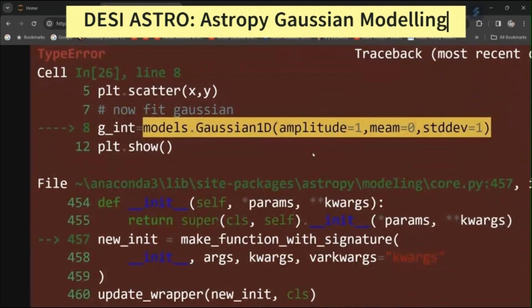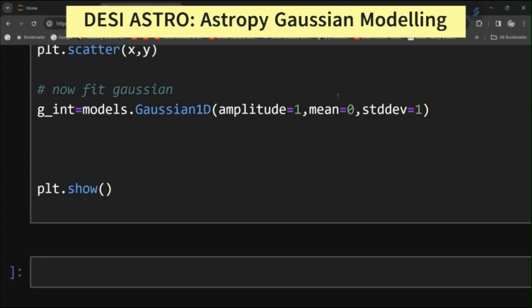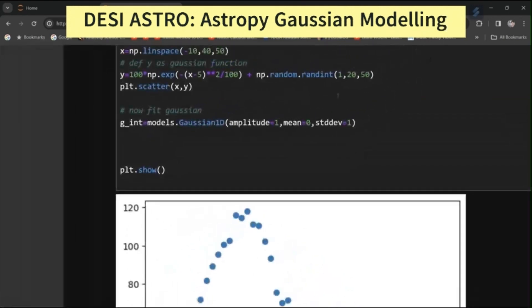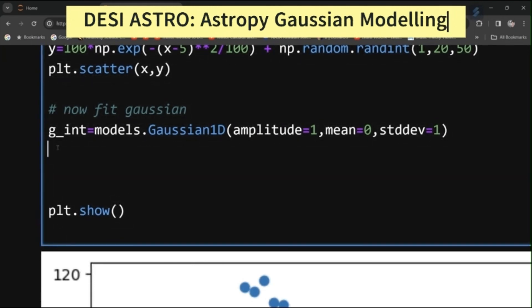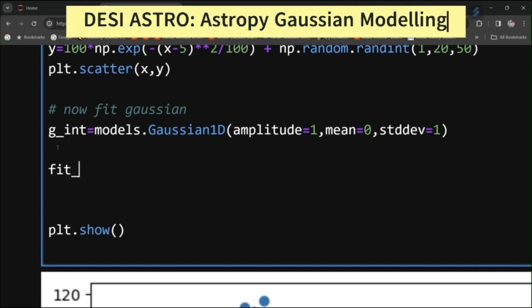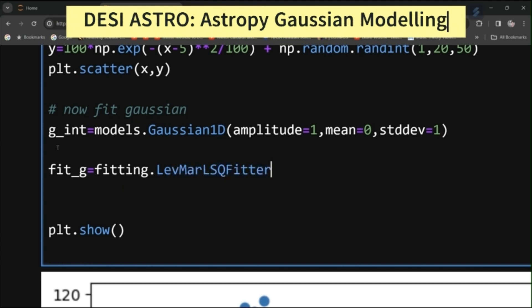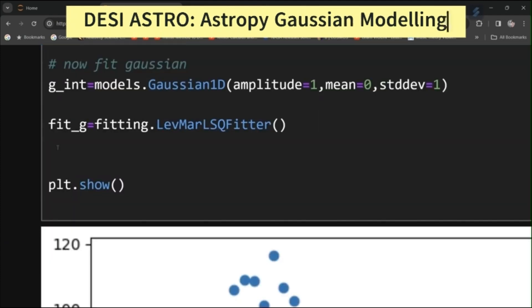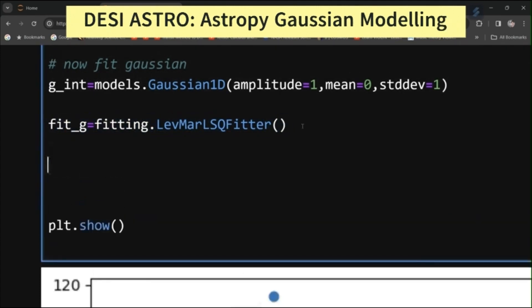Now I will initialize our fitter. fit_g equal to fitting.LevMarLSQFitter and I will call the function. This will be used to fit the data points. Now I will do the actual fitting.